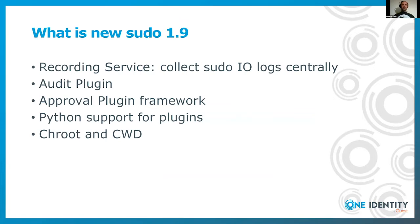So what is new in sudo 1.9? It introduced the recording service so sudo can collect IO logs centrally. There are two new APIs: the audit plugin and the approval plugin. You can extend sudo with plugins written in Python, and you can configure chroot and change working directory for sudo.